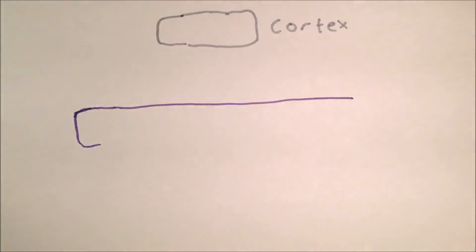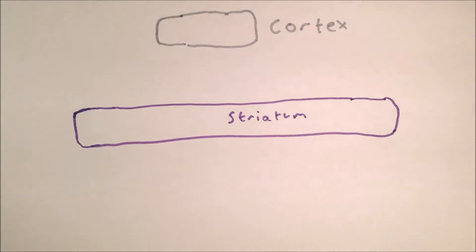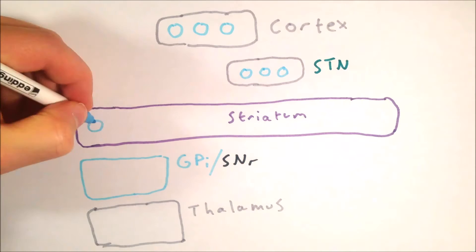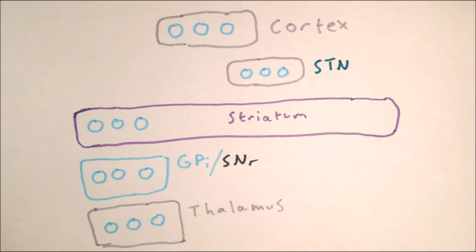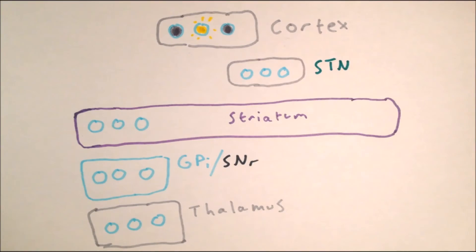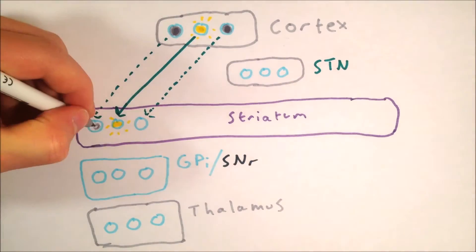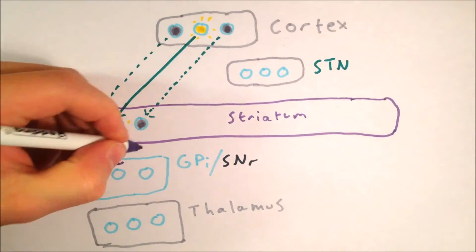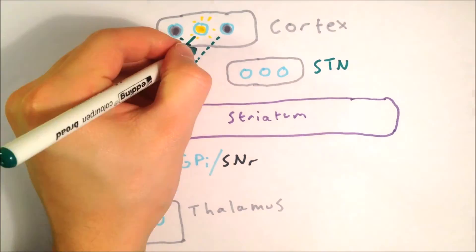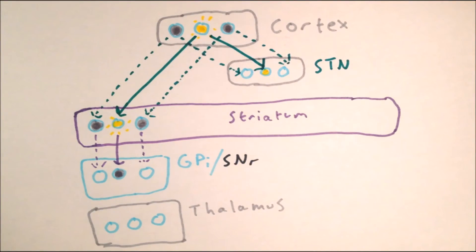For example, let's say we have three competing loops, with the middle loop connecting cortical areas most relevant to the current situation. As it has the greatest salience, its neurons are firing at the greatest rate. These connect through excitatory connections to the input unit of the basal ganglia — the striatum — and through the hyperdirect pathway to the subthalamic nucleus.